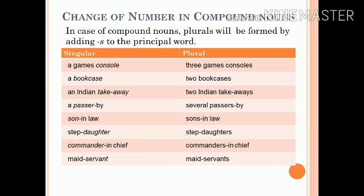Now it is the turn of compound nouns. In the case of compound nouns, the plural is formed by adding S to the principal word. For example: 'son-in-law' — here the principal word is 'son', so its plural will be 'sons-in-law'. Then we have 'maid-servant' — here 'servant' is the principal word, so its plural will be 'maid-servants'.